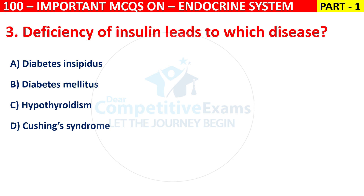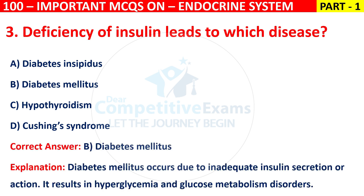The correct answer is B, that is diabetes mellitus. Diabetes mellitus occurs due to inadequate insulin secretion or action. It results in hyperglycemia and glucose metabolism disorders.